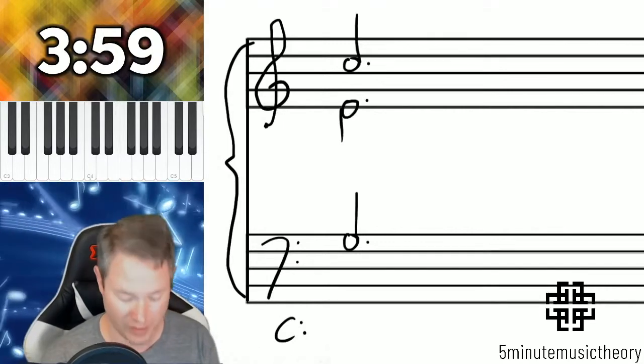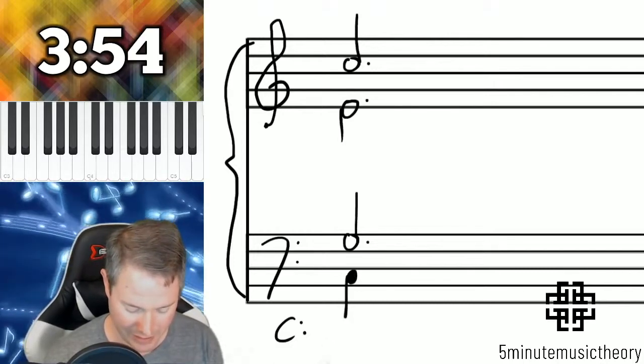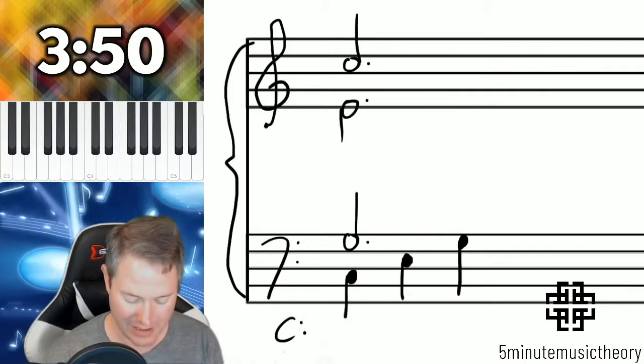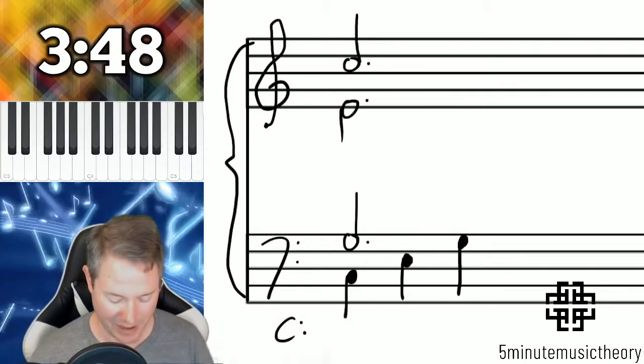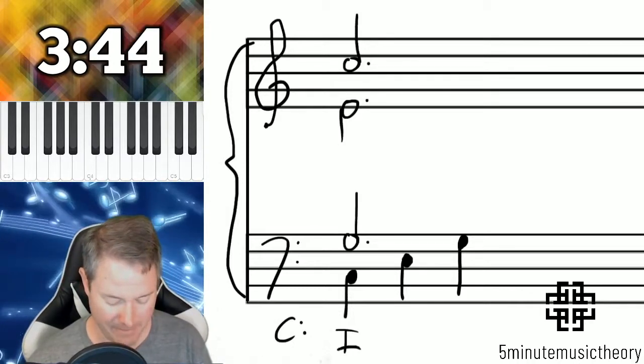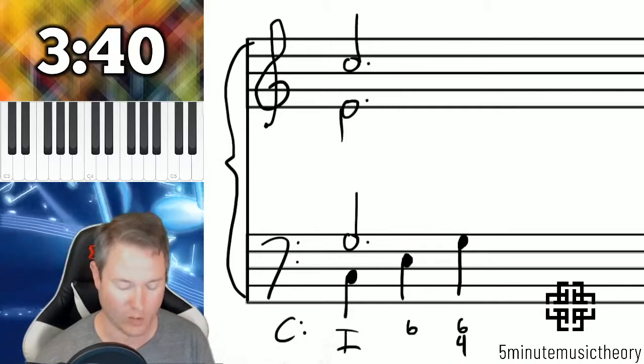They're going to be worth three quarter notes. Then underneath, we're going to do this: C, E, G. So what's happening here, it appears to be a C major chord in root position, then turning into a first inversion, and then into a 6-4.